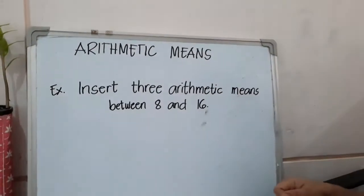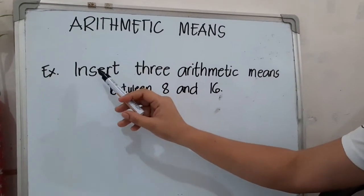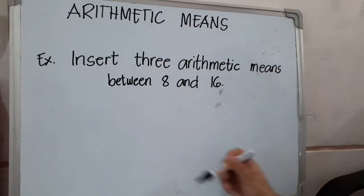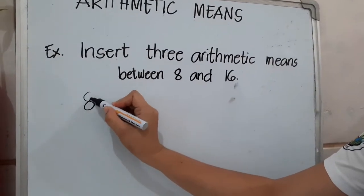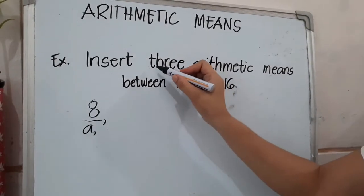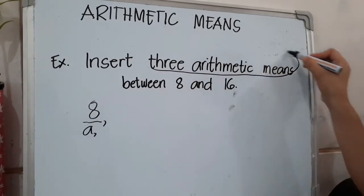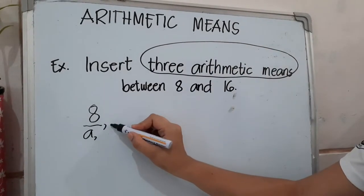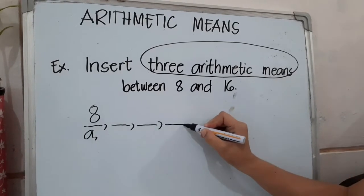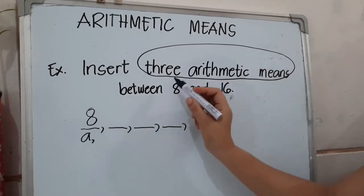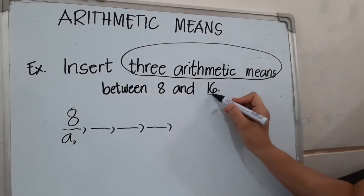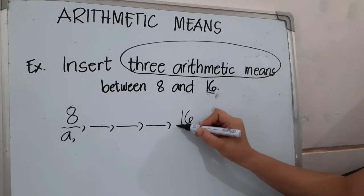For example, insert three arithmetic means between 8 and 16. The 8 here will represent our first term, and since we have to insert three arithmetic means, there will be a first, second, and third — these are the three terms that refer to the three arithmetic means. And 16 here will be our last term.